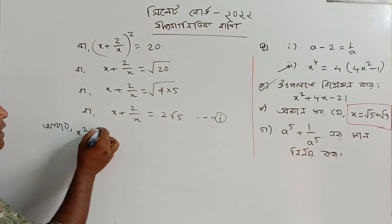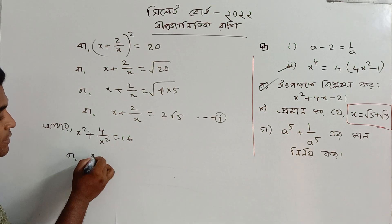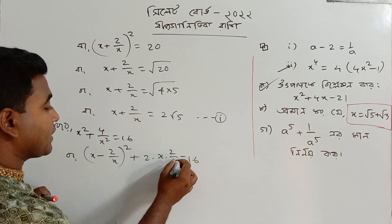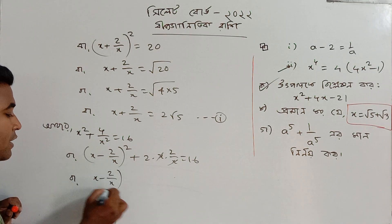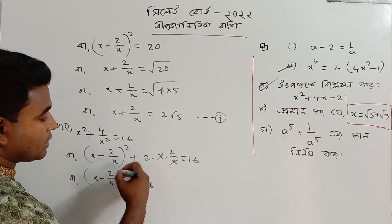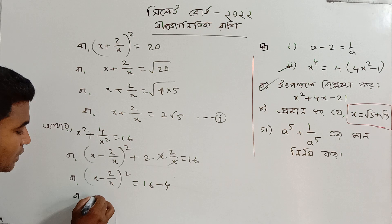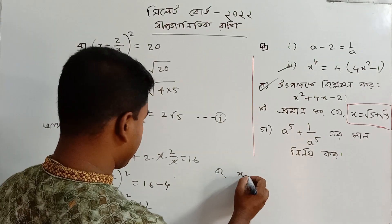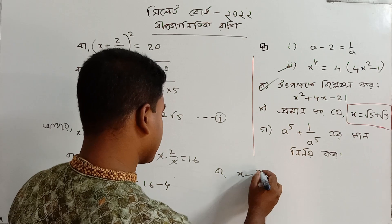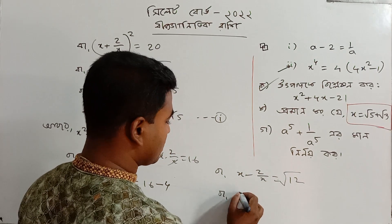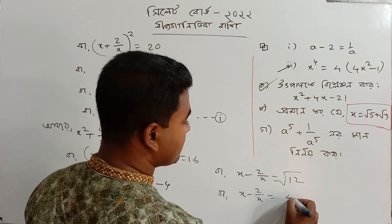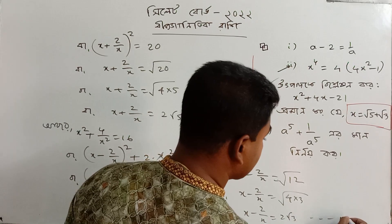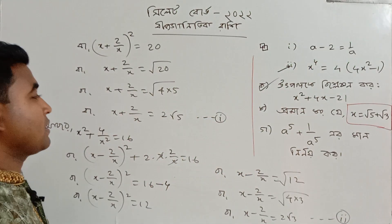About x squared plus 4 by x squared equal to 16 — using the identity a minus b whole squared equals a squared minus 2ab plus b squared — we get x minus 2 by x whole squared plus 4, giving x minus 2 by x squared equals 12. So x minus 2 by x equals 2√3.